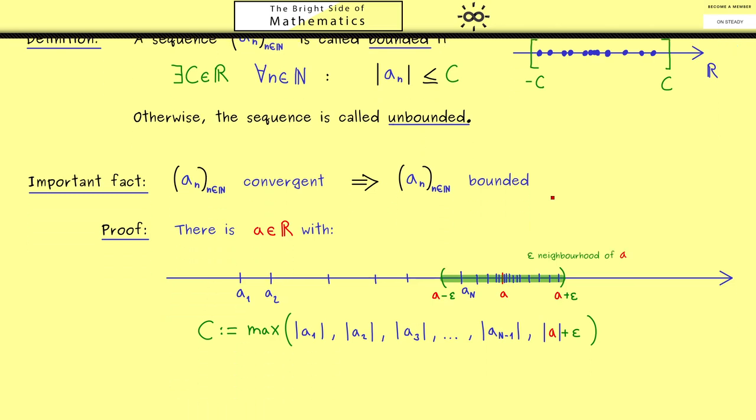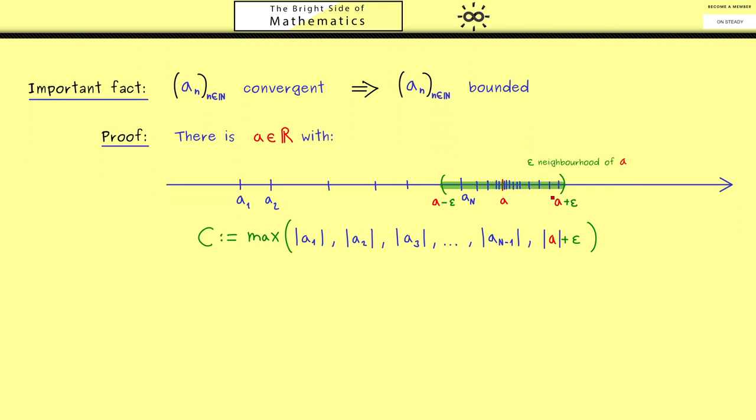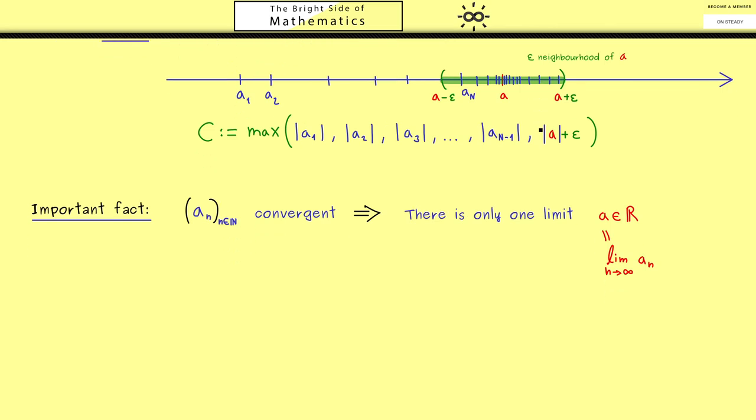Knowing this let's go to another important fact about sequences. You know if you consider a convergent sequence you find such a limit a but this a is indeed uniquely given. Therefore we are able to speak of the limit of the convergent sequence. Moreover the notation limit a_n makes sense. So let's end this video by proving this important fact.